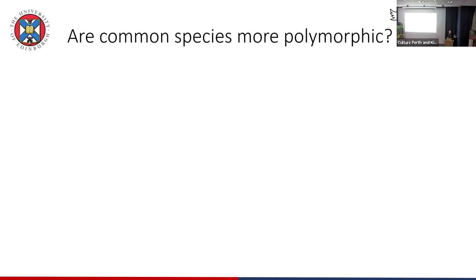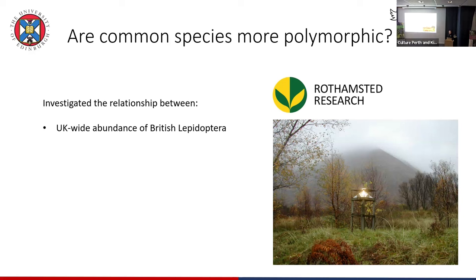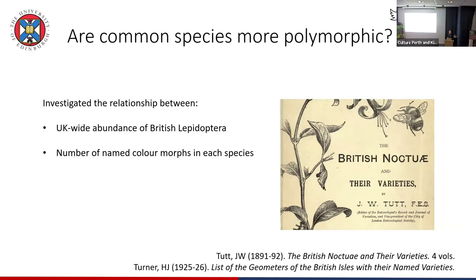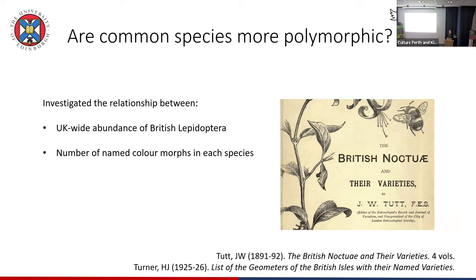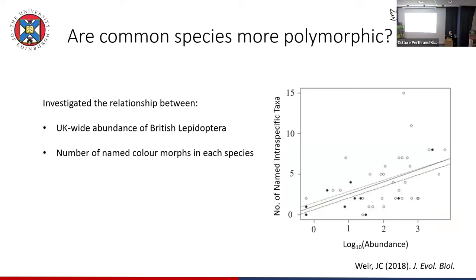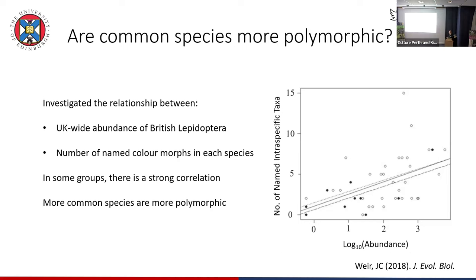Some of you will probably have thought this anecdotally — really common species tend to be quite colour polymorphic. Kettlewell mentioned this about winter-active moths too. So I went out to test this a couple of years ago. I wanted to find out if there's a relationship between how abundant different moth species in the UK are and the number of named colour forms. I got abundance data from the Rothamsted Light Trapping Network and went back to the literature to count named colour morphs as an approximate measure of variability. This is what I found: for species active between October and April, as species get more abundant they get more named colour morphs. In certain groups of Lepidoptera, more common species really are more polymorphic.